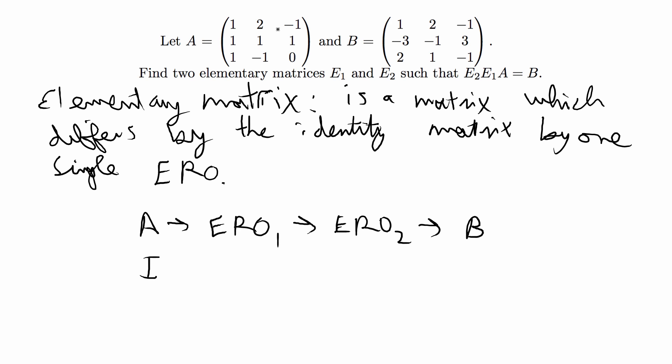To do that, we're going to take a 3x3 identity matrix and then perform elementary row operation 1, and that will give you E1, which is the first elementary matrix. You do the same thing with elementary row operation 2 on a new identity matrix and that will give you the second elementary matrix. Let's go ahead and solve the problem so you guys can see what I'm talking about.